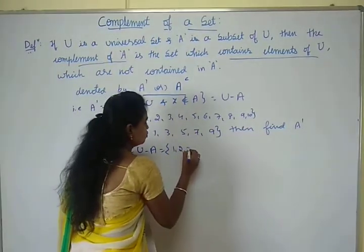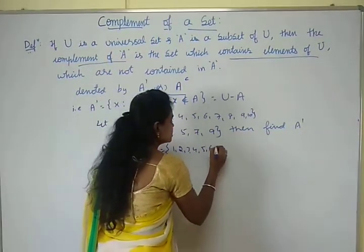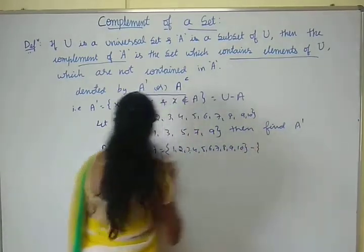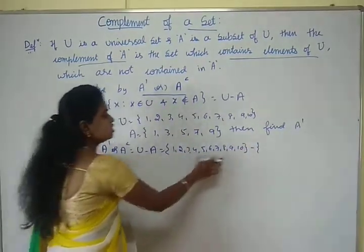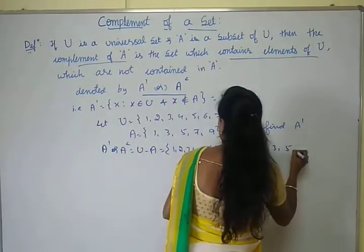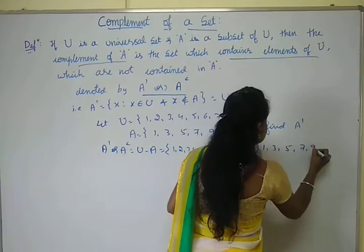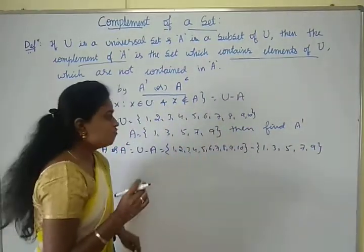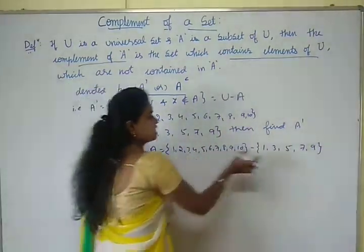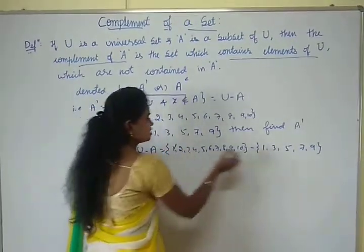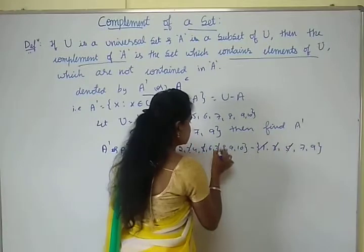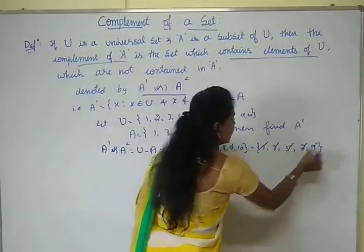So the universal set U is {1, 2, 3, 4, 5, 6, 7, 8, 9, 10} minus A, which is {1, 3, 5, 7, 9}. First, identify the elements which are present in both U and A. That is 1, 3, 5, 7, and 9.